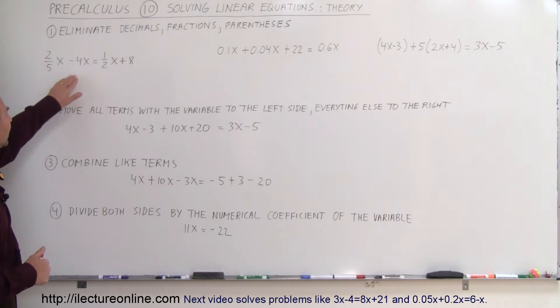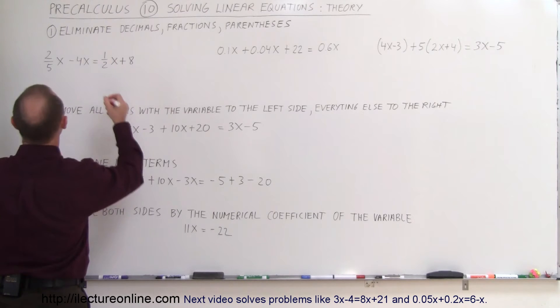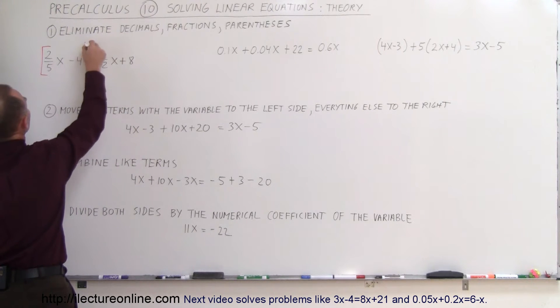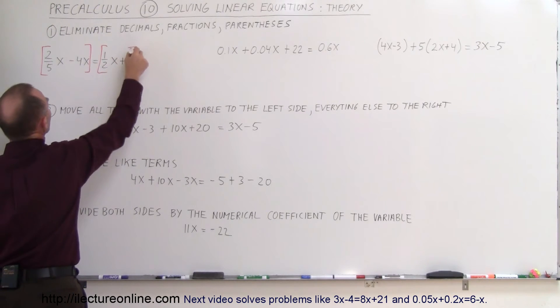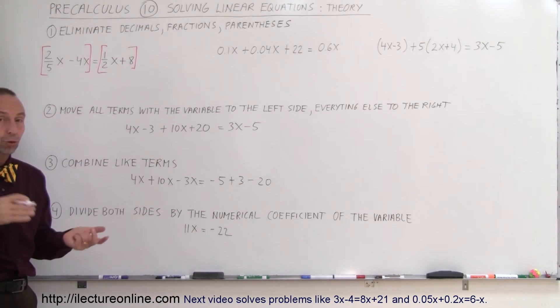Okay, so what do we do first? Here we have some fractions. You want to get rid of the fractions. The way you do that is to multiply both sides of the equation by the lowest common denominator. In this case, since we have a 5 and a 2, the common denominator would be simply 2 times 5 or 10. So multiply both sides of the equation by 10.